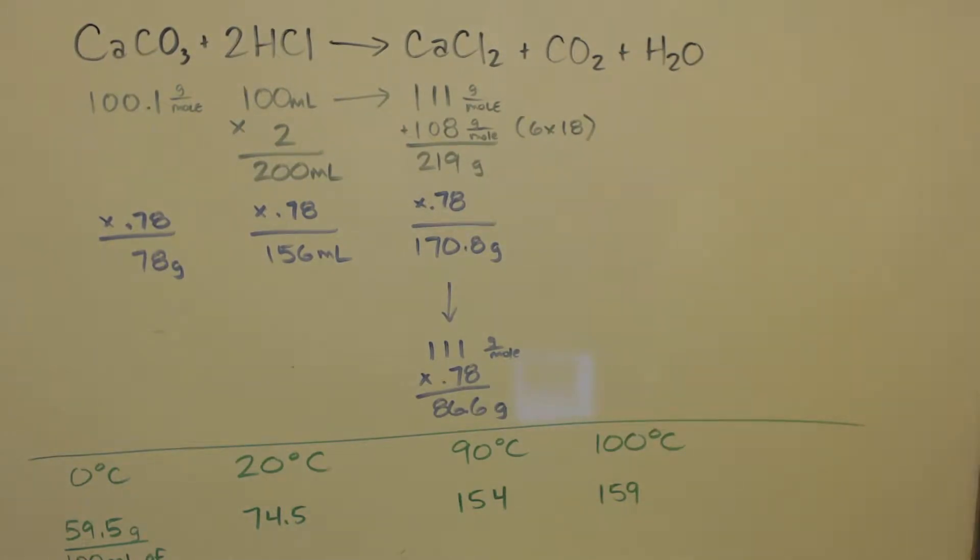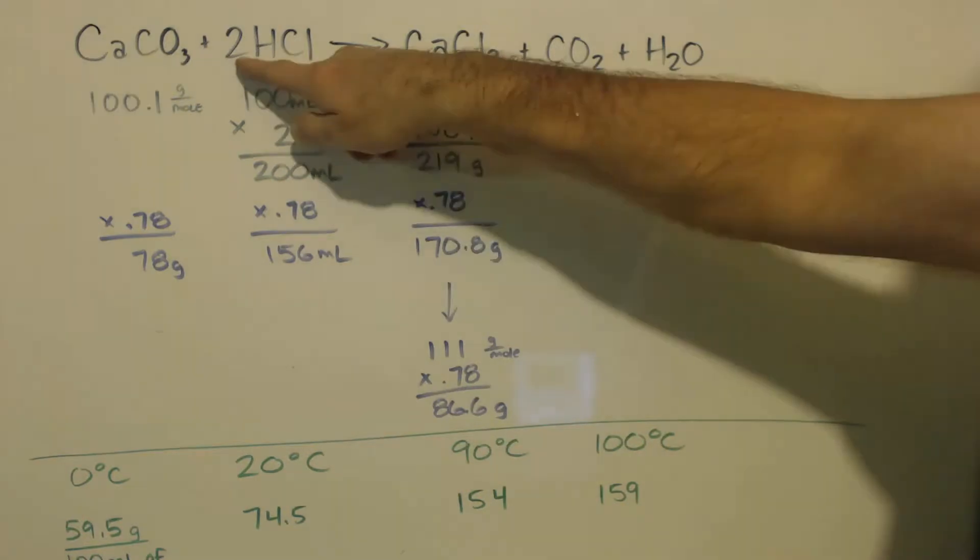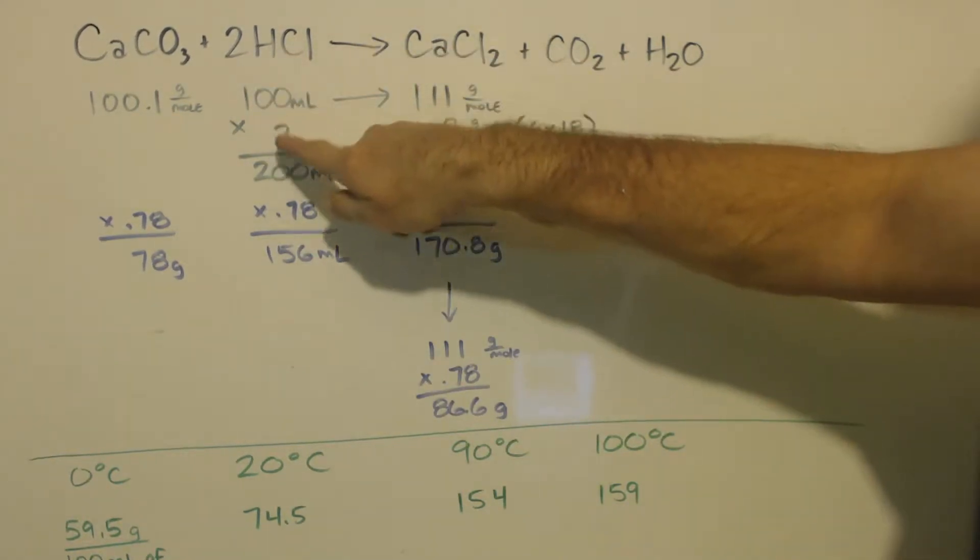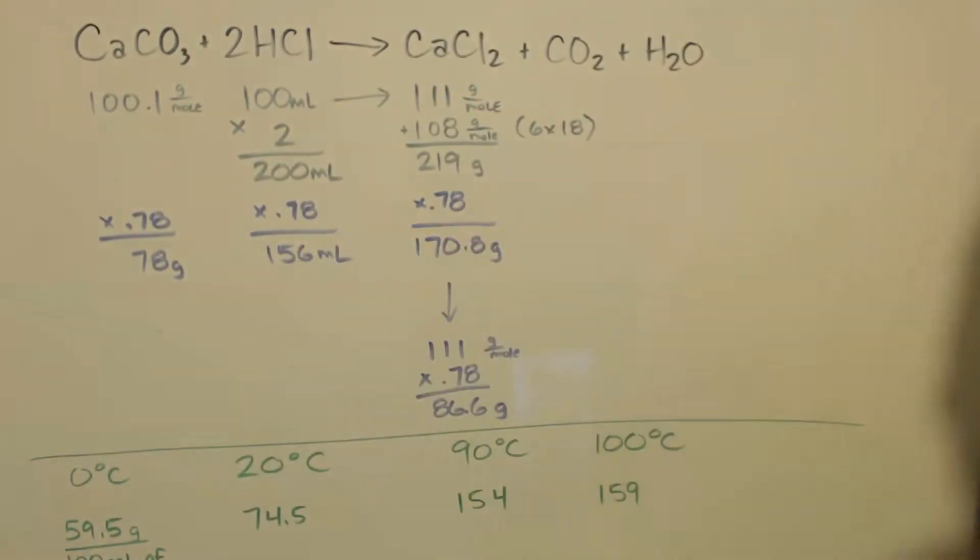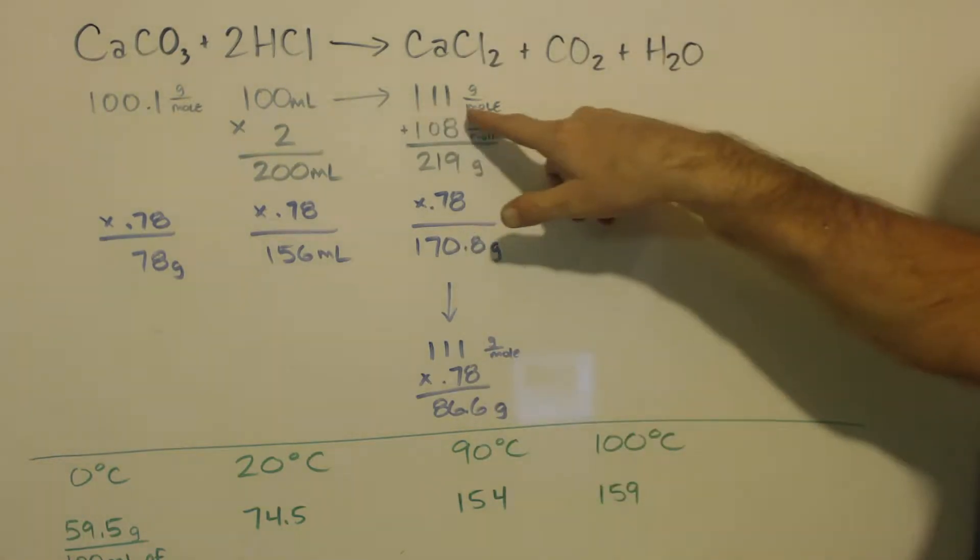For concentrated hydrochloric acid, there's approximately one mole per 100 milliliters. I need two moles, so I times that by two to get 200 milliliters, times by my 0.78, which gave me 156 milliliters. That's what I used.